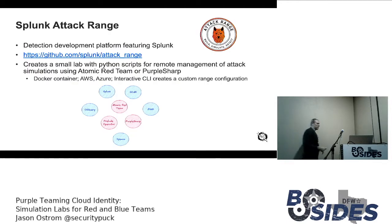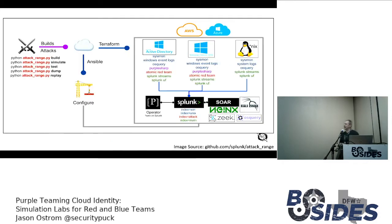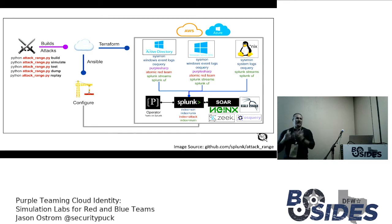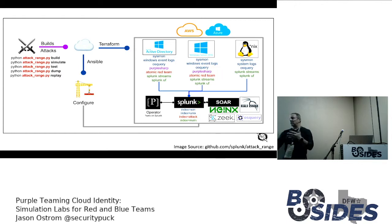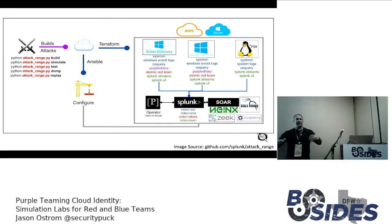The other one is Splunk Attack Range, made by some Splunk employees. It's a bit different from Detection Lab because they have Python orchestrator scripts that will remotely simulate attacks over the network. Splunk Attack Range has support for Atomic Red Team and will remotely run the attacks, mapped in the MITRE ATT&CK framework. A key element is that these are both single-host detection ranges — you run attacks on a single host not connected to Active Directory, good for testing EDR bypass and endpoint security.